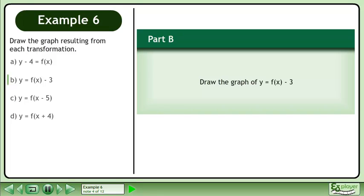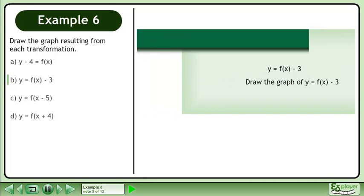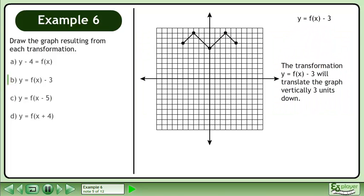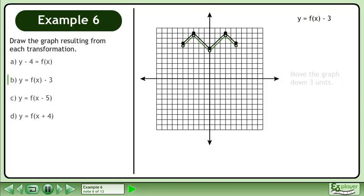In part B, we'll draw the graph of y equals f. The transformation y equals f will translate the graph vertically 3 units down. Move the graph down 3 units.